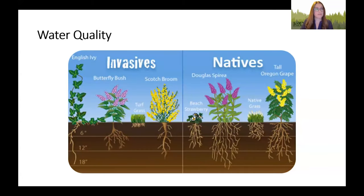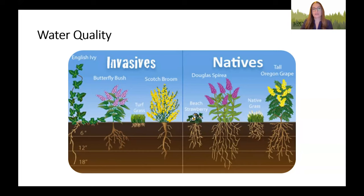Another reason for water quality: our native plants can do a better job at maintaining or improving water quality. Since they're well adapted to the area, they tend to grow deeper, more fibrous roots, and they can improve stormwater infiltration as well as prevent erosion, which is a water quality concern.